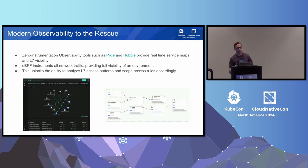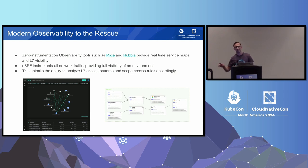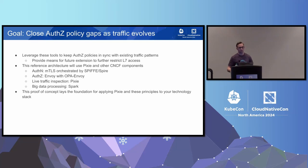On the left-hand side here, this is a picture of what the Pixie UI looks like. We have a network flow graph that shows how all the microservices are connected. On the right-hand side is Hubble, which shows a similar view and is also able to point out that these HTTP services are talking to Kafka, ZooKeeper, and Elasticsearch downstream. The goal of this talk is that we are going to close AuthZ policy gaps as traffic evolves, leverage these powerful eBPF tools to keep authorization policies in sync with existing traffic, and set the foundation for future extension to provide least privilege access on a layer 7 basis.